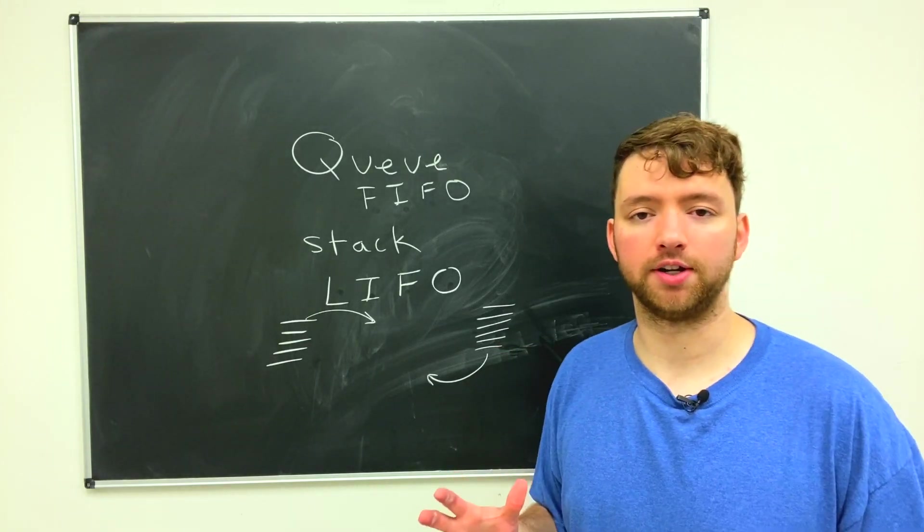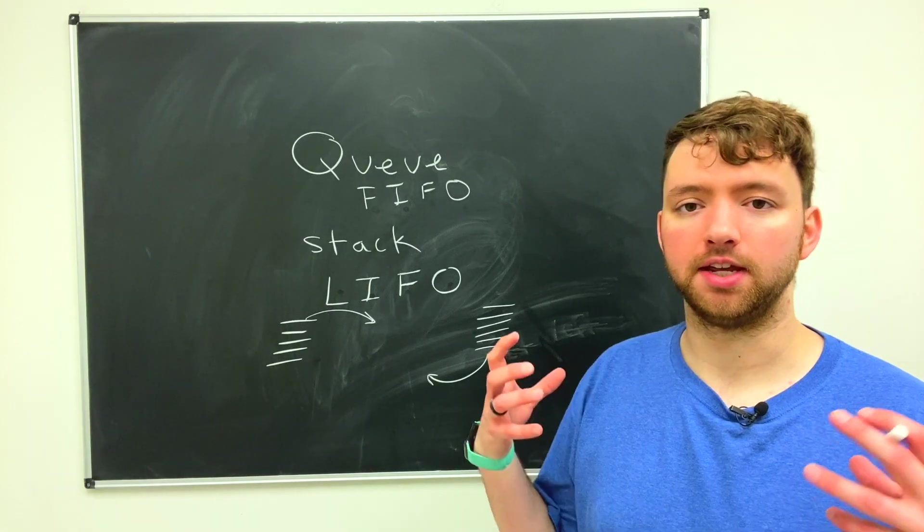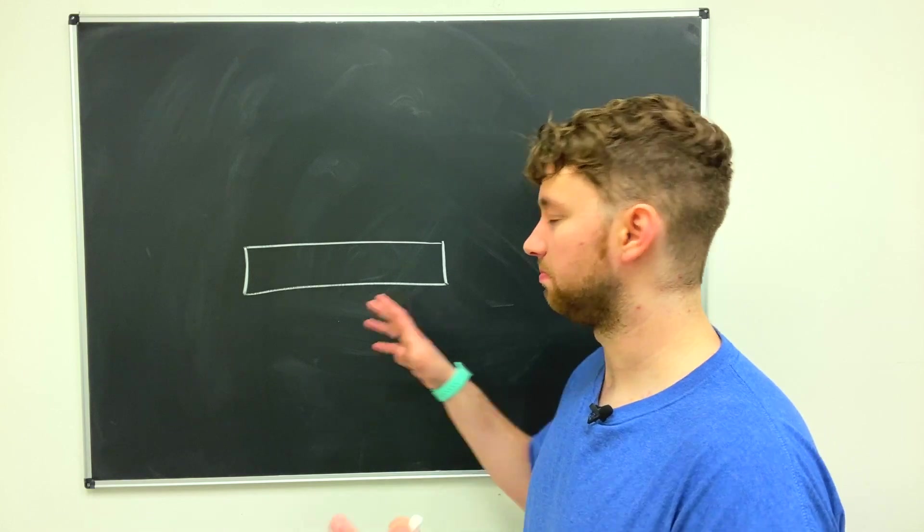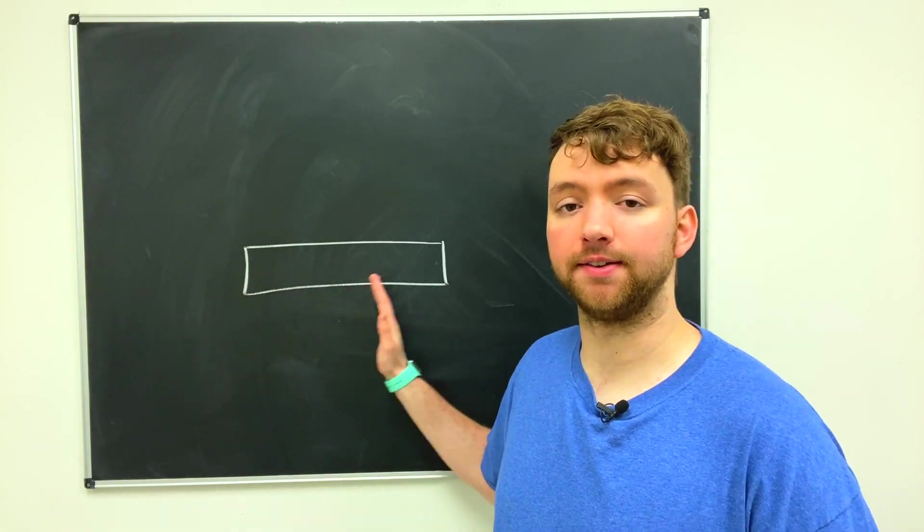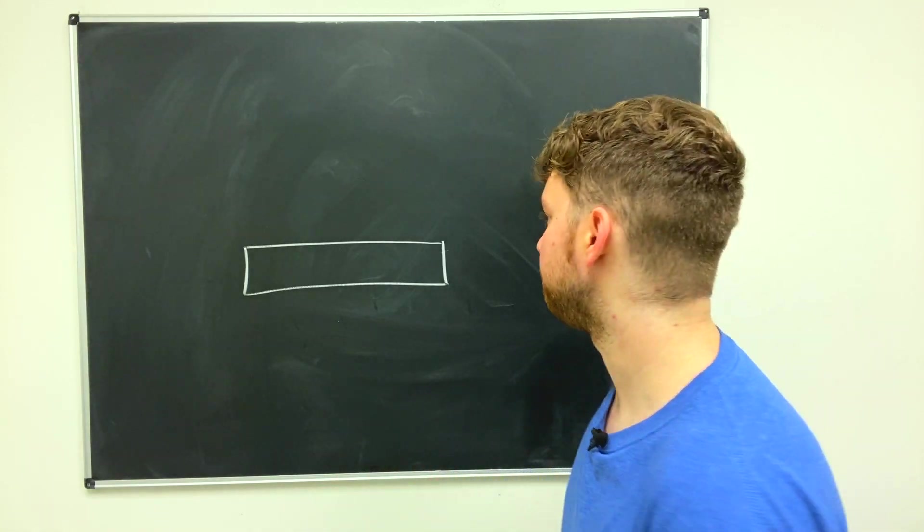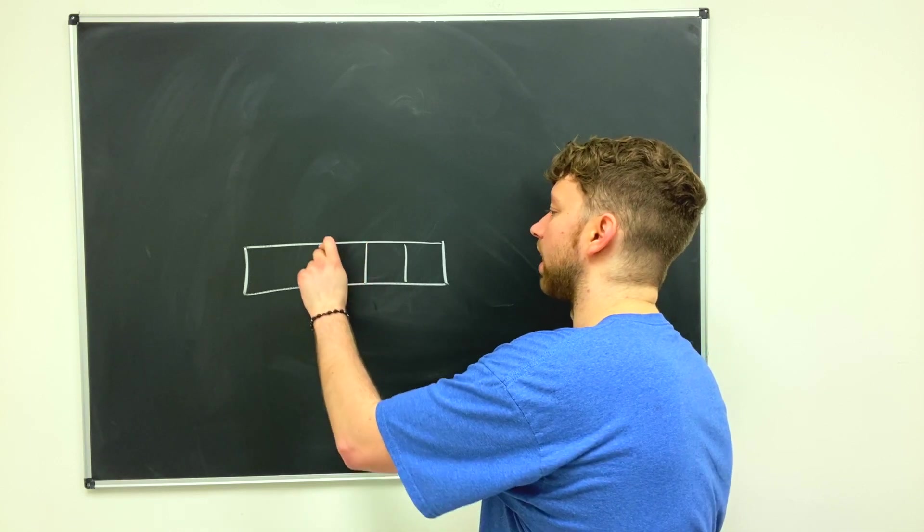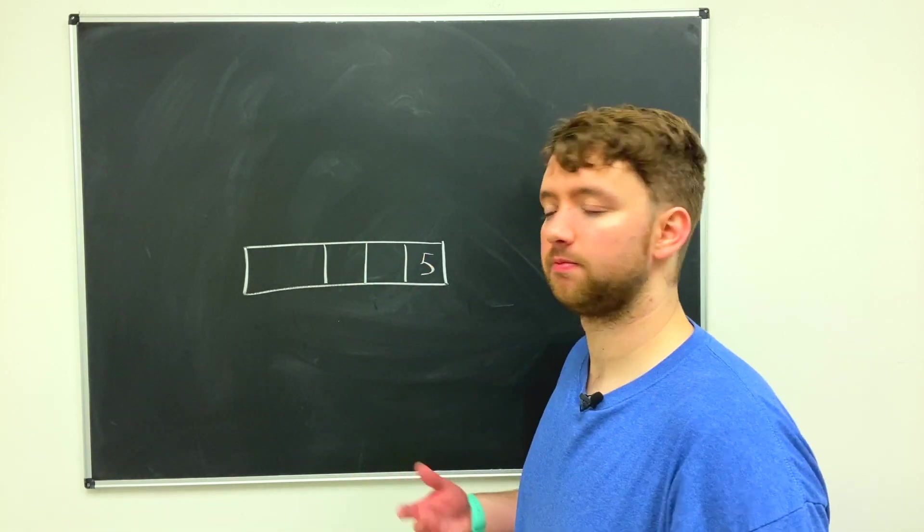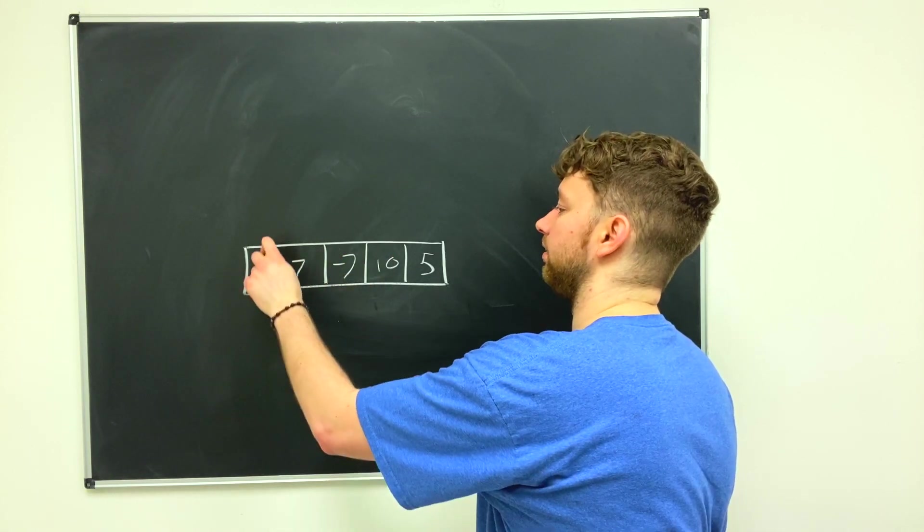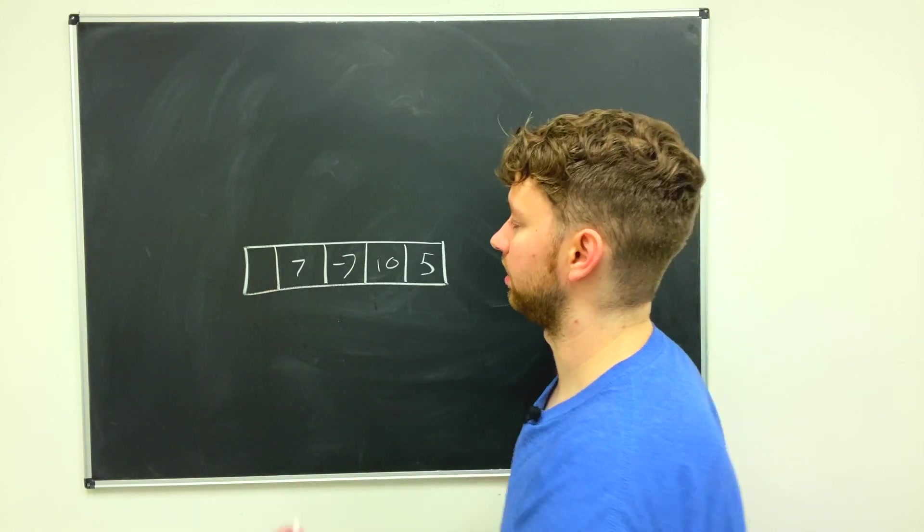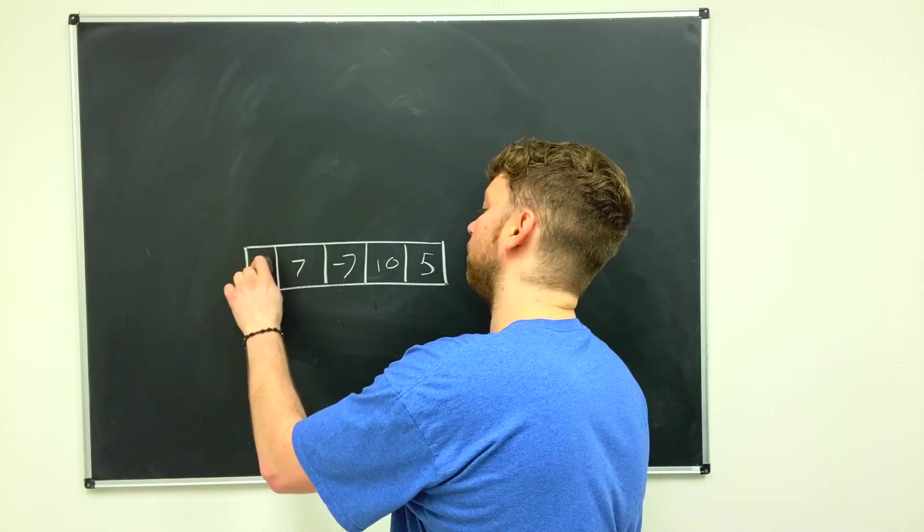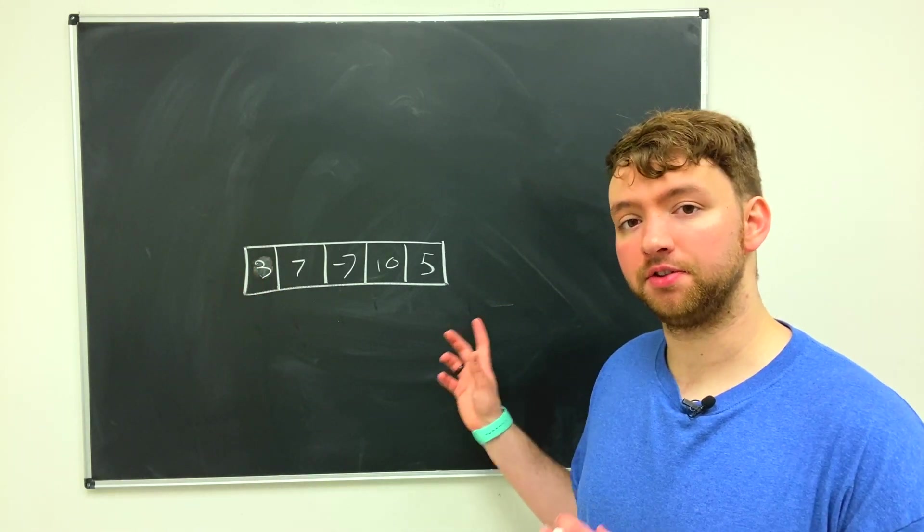So those are the primary differences. So how could you visualize this in memory? How would this be stored? When you think of storing data in a collection you might naturally think to start at the left and fill it in this way. However I would challenge you for a queue to think about it the other way. We're gonna start adding elements from this side. Let's say we add the element five and then we add the element ten, negative seven, seven, and then we'll go with three.